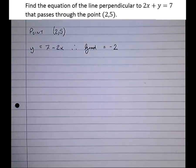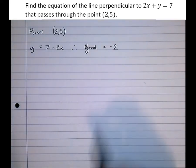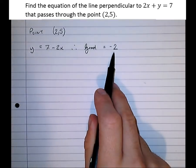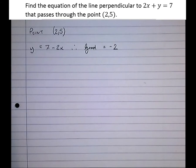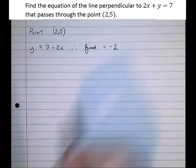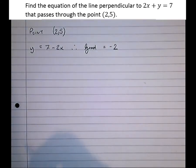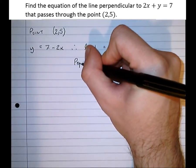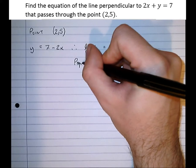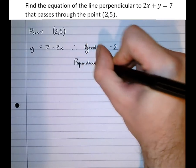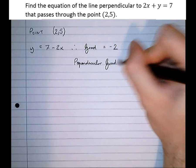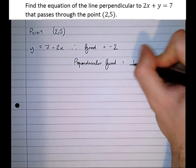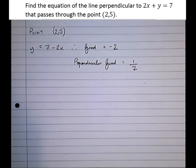But we don't want the gradient of that line. We want the gradient of the line perpendicular to that. So what we need to do is find the negative reciprocal of that. The reciprocal is minus a half. Therefore the negative reciprocal, change the sign, would just be a half. So perpendicular gradient equals one half. We've flipped it to get minus a half, then change the sign, the negative reciprocal.